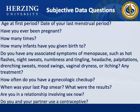To obtain subjective data from a female patient, ask questions regarding menstrual and obstetric history, contraceptive use, sexual activity, sexually transmitted infection contact, and self-care behaviors. Ask about vaginal discharge and urinary symptoms, and ask about menopause and past pertinent history.